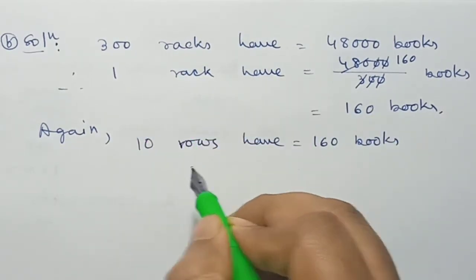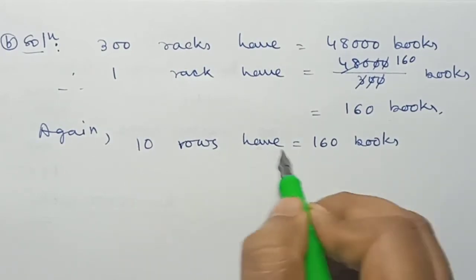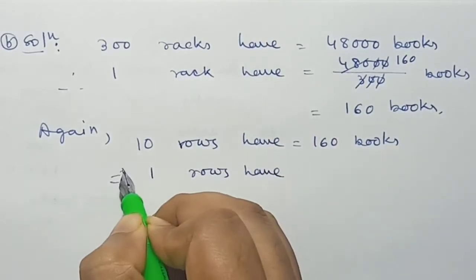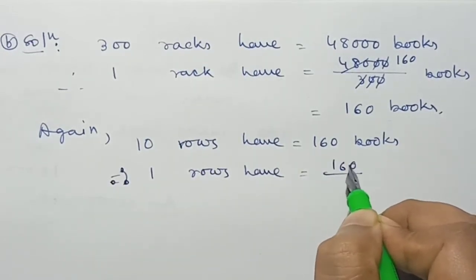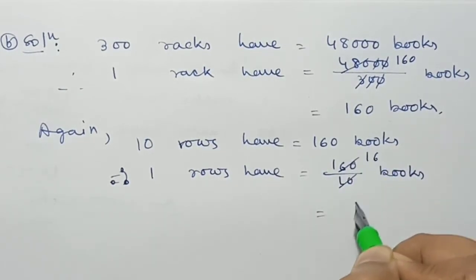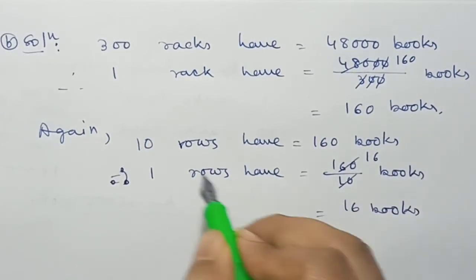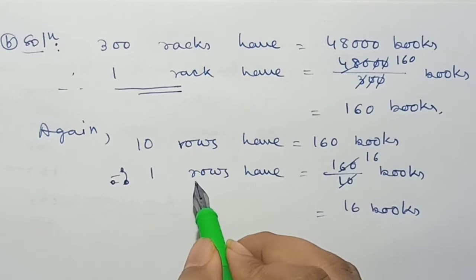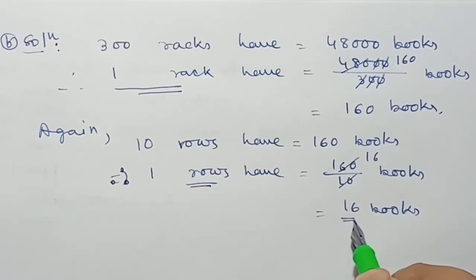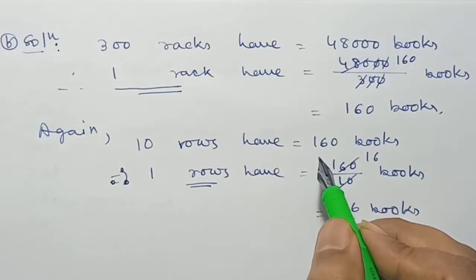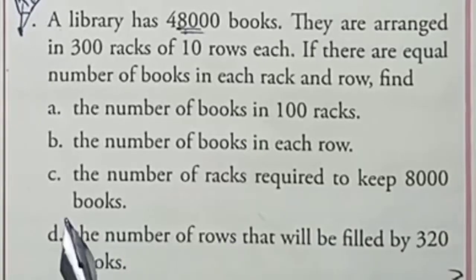1 rack has 10 rows and 160 books. Therefore, 1 row has 160 divided by 10 books. Finally, 1 row has 16 books. So in 10 rows there are 160 books, and 10 into 16 equals 160 books per rack. The answer to Question B: 1 row has 16 books.